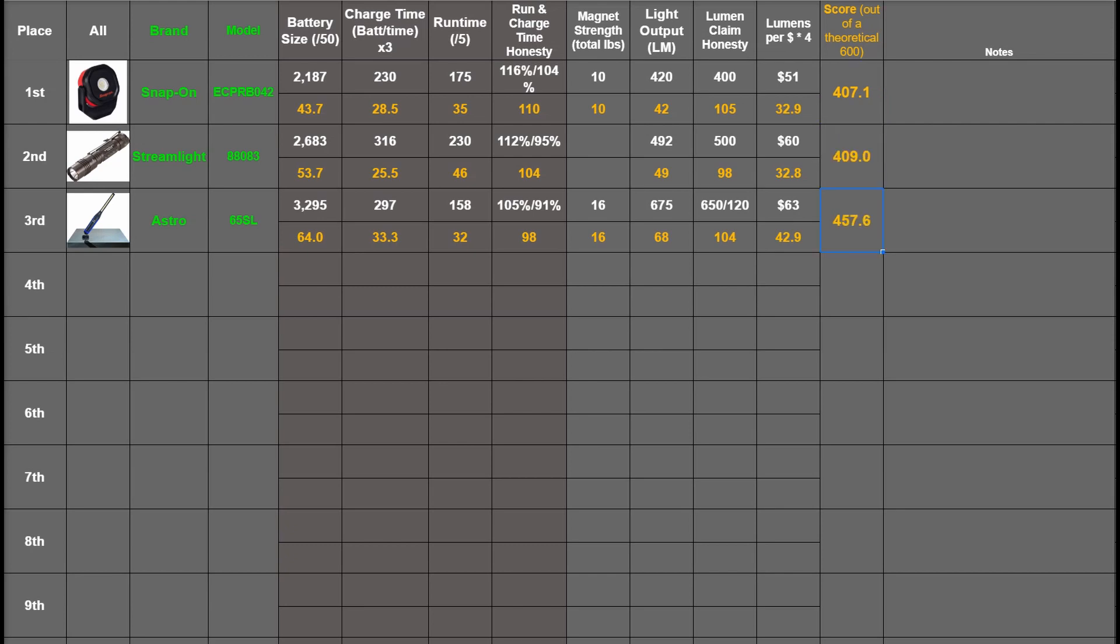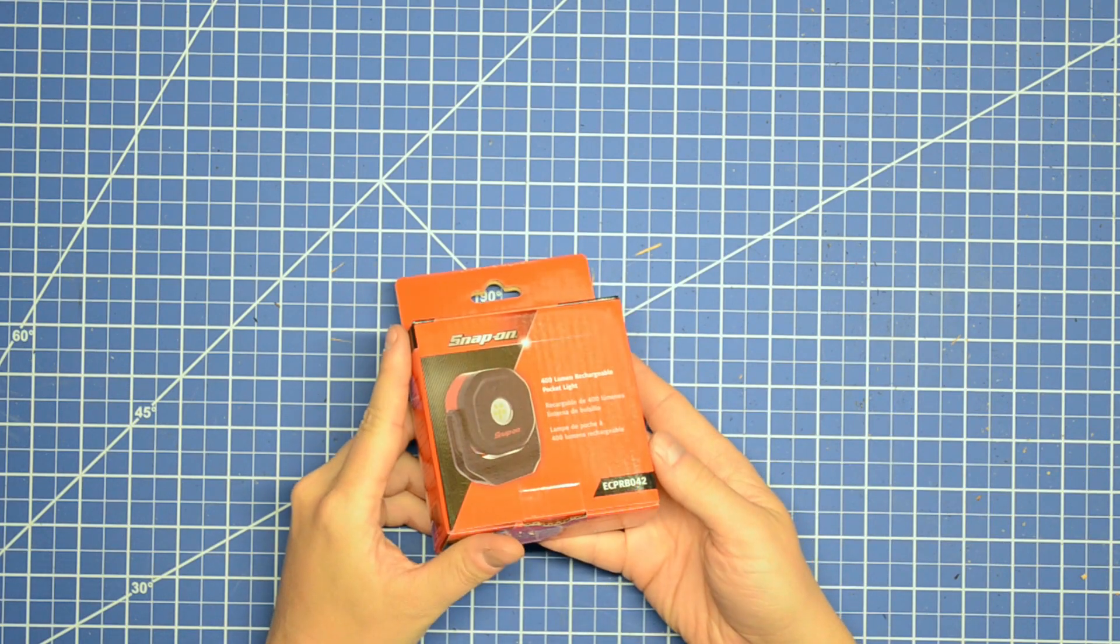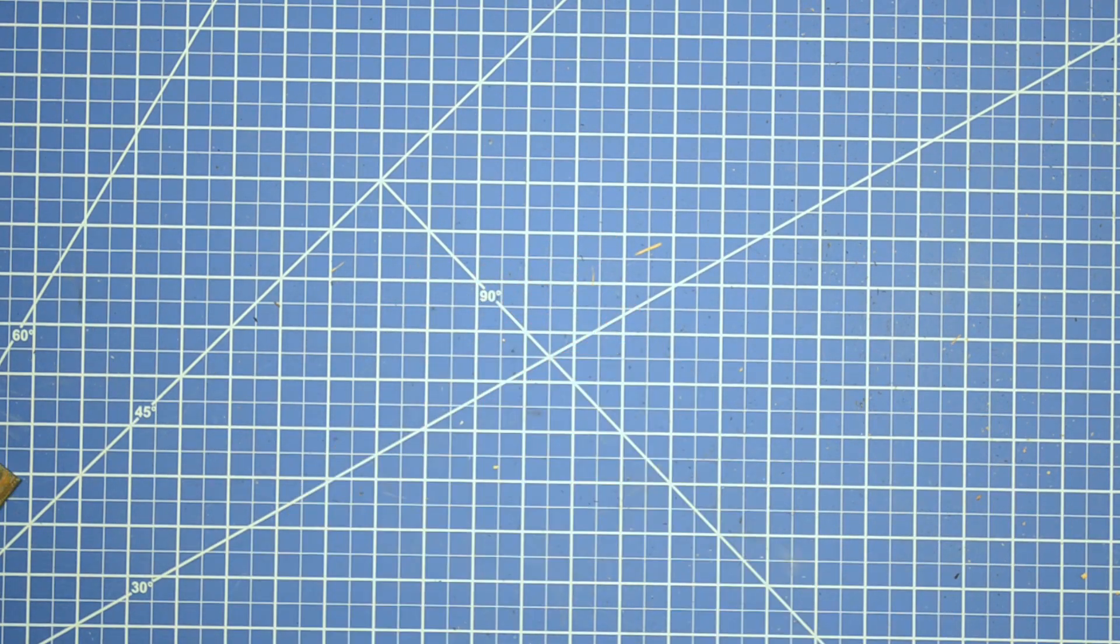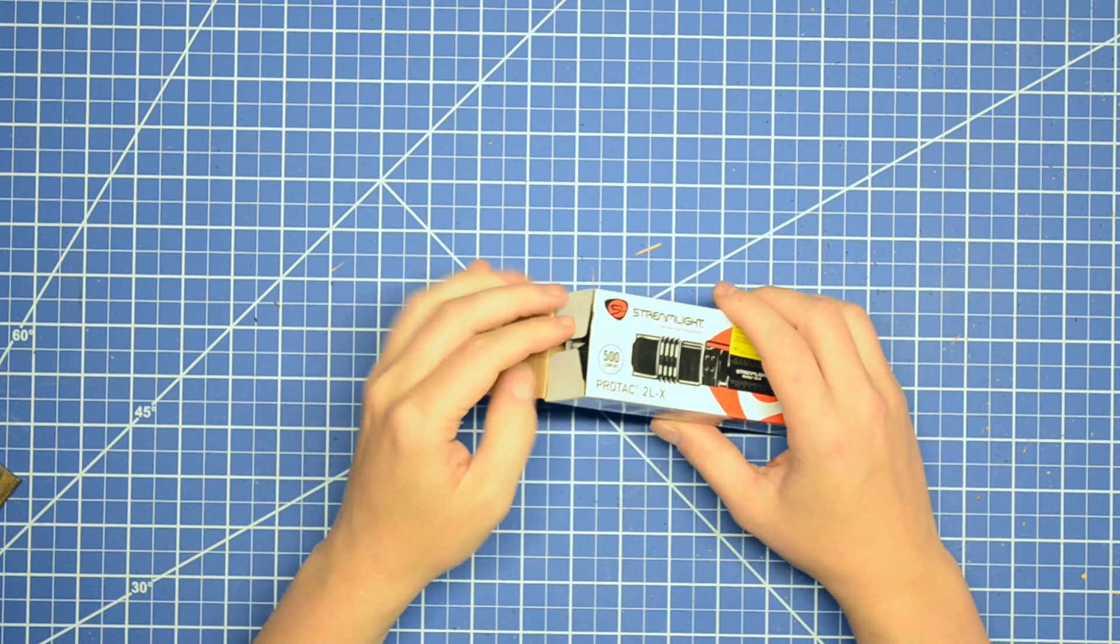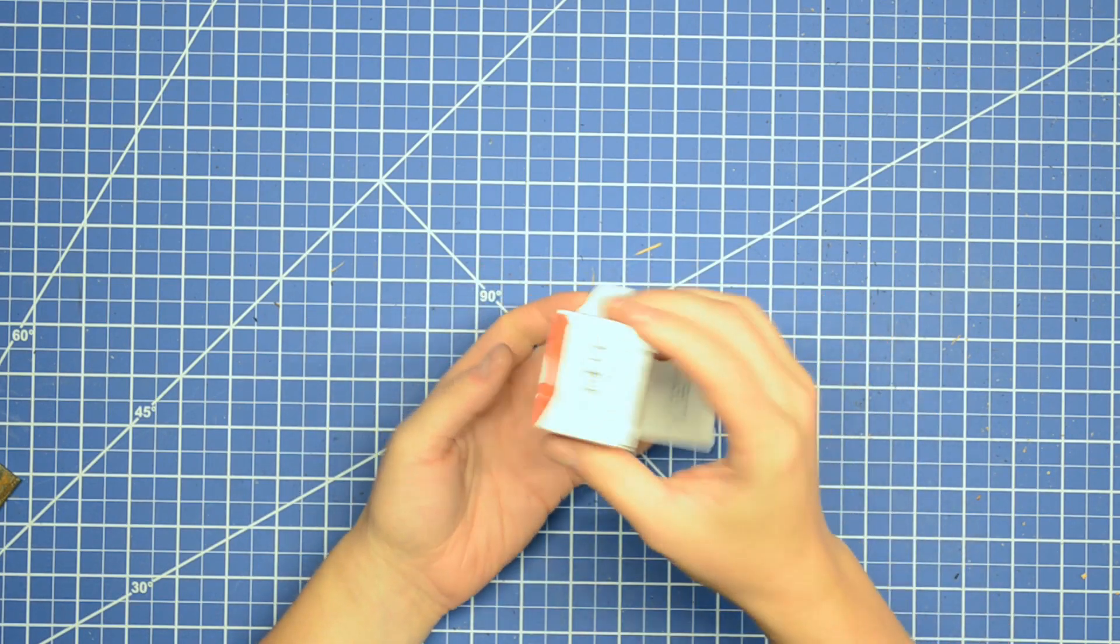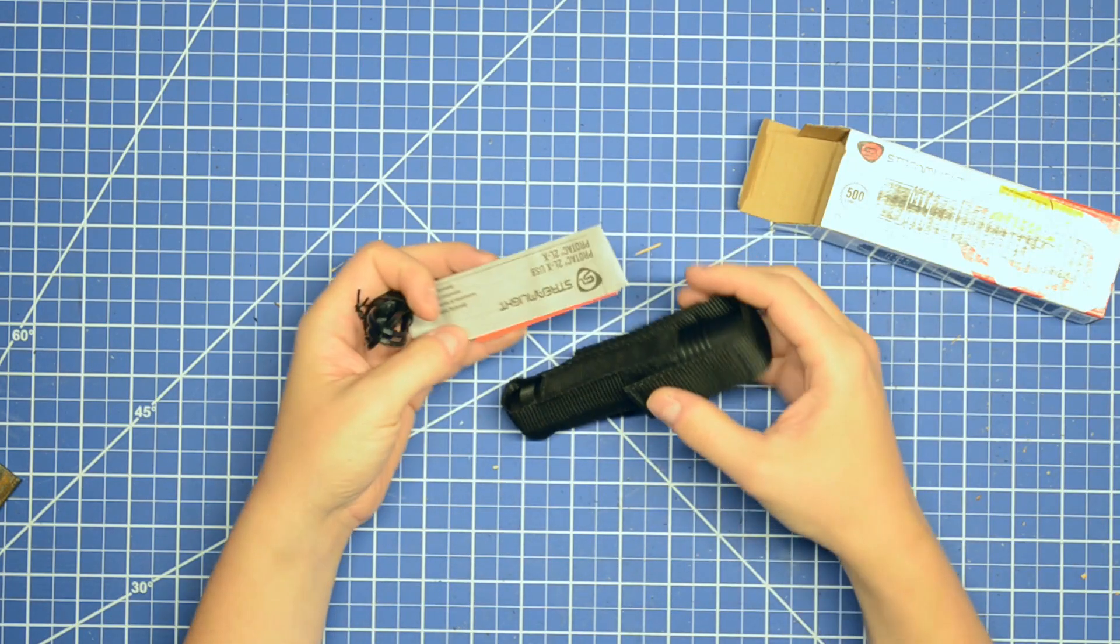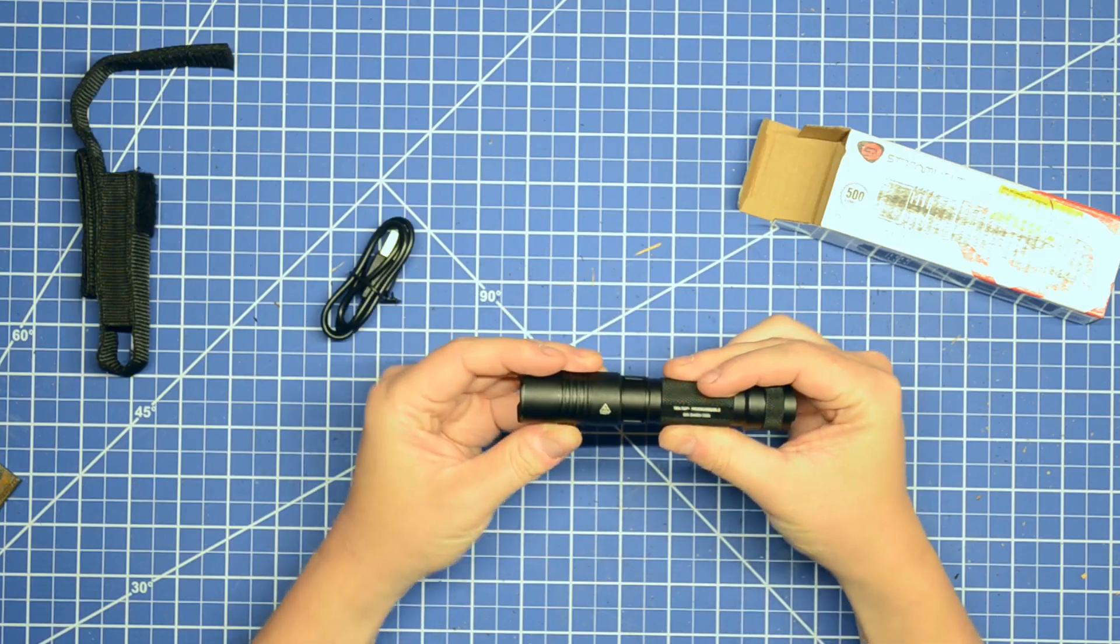That totals 407.1, 409 and 457.6 out of a theoretical 600. Of course none of these will be competing against each other so we're not ranking them here, three different lights, but they all seem to perform quite well in our opinion. They each have their own pluses and minuses like Snap-on being ABS plastic and brands loving to leave out that charger.